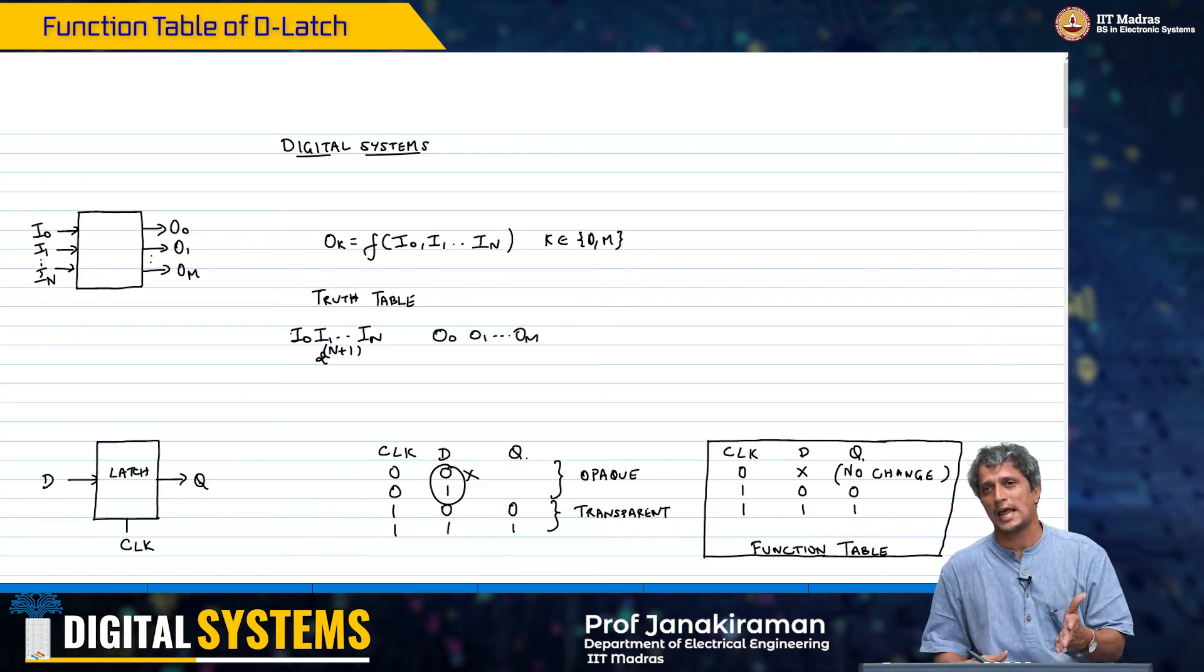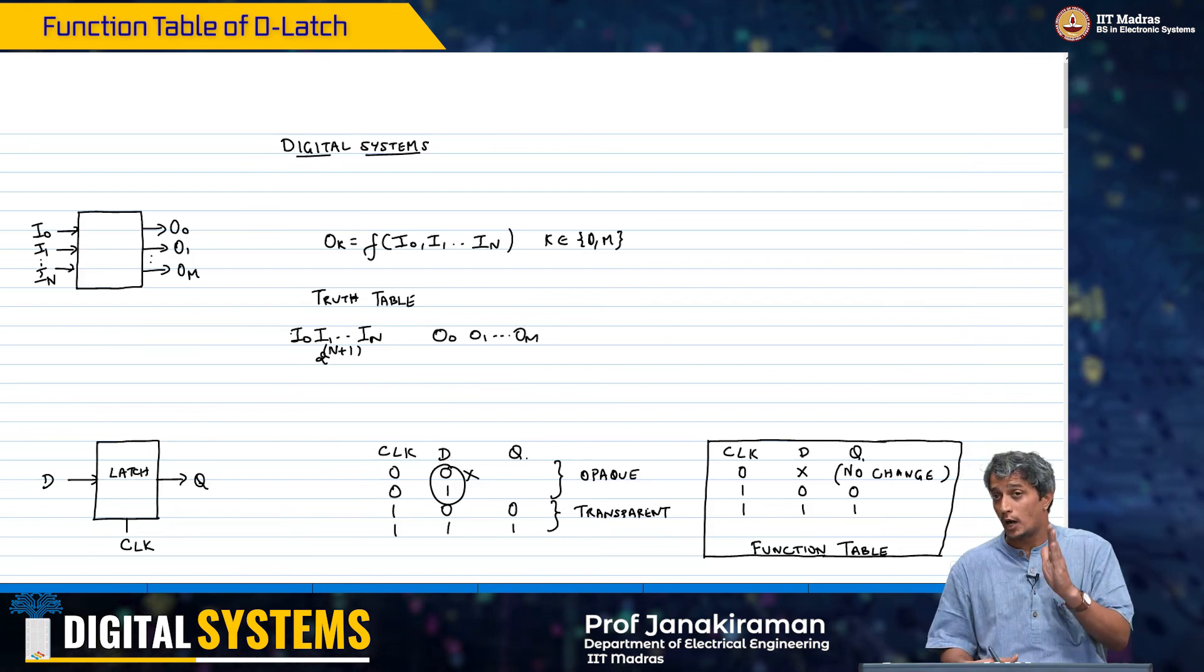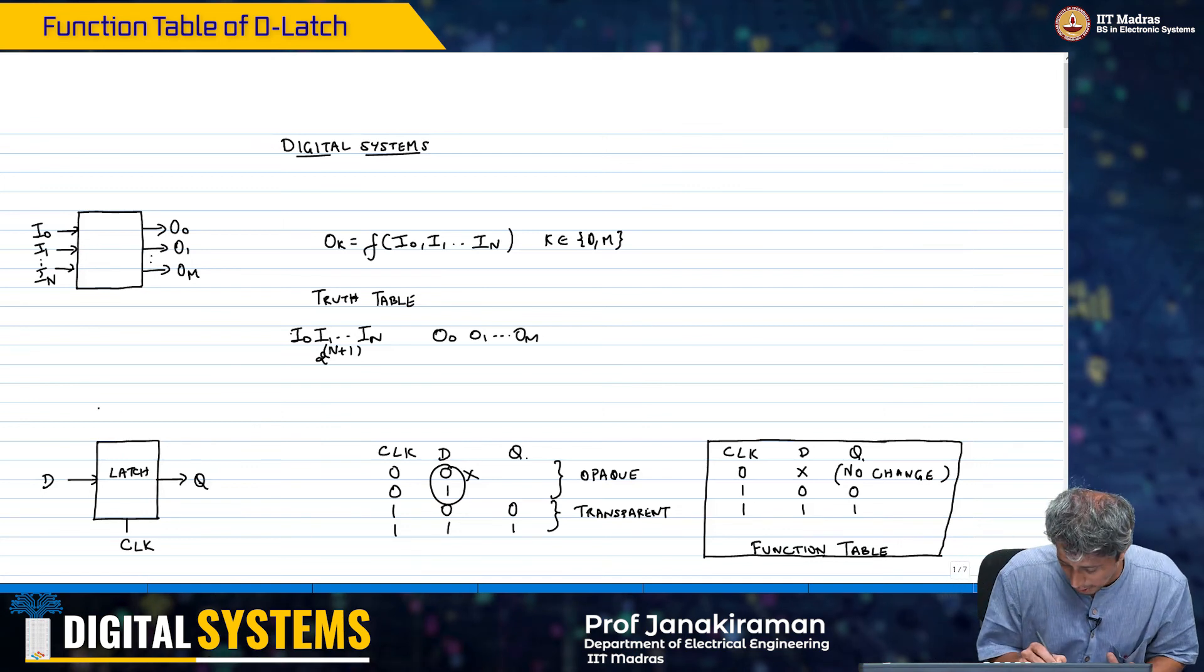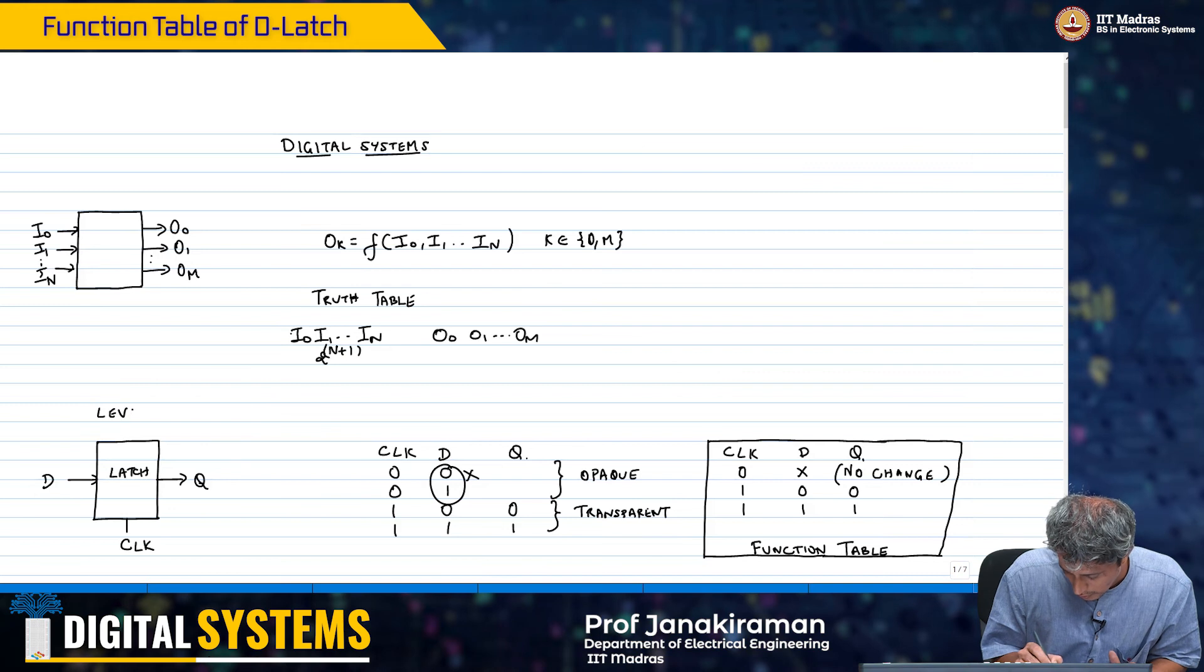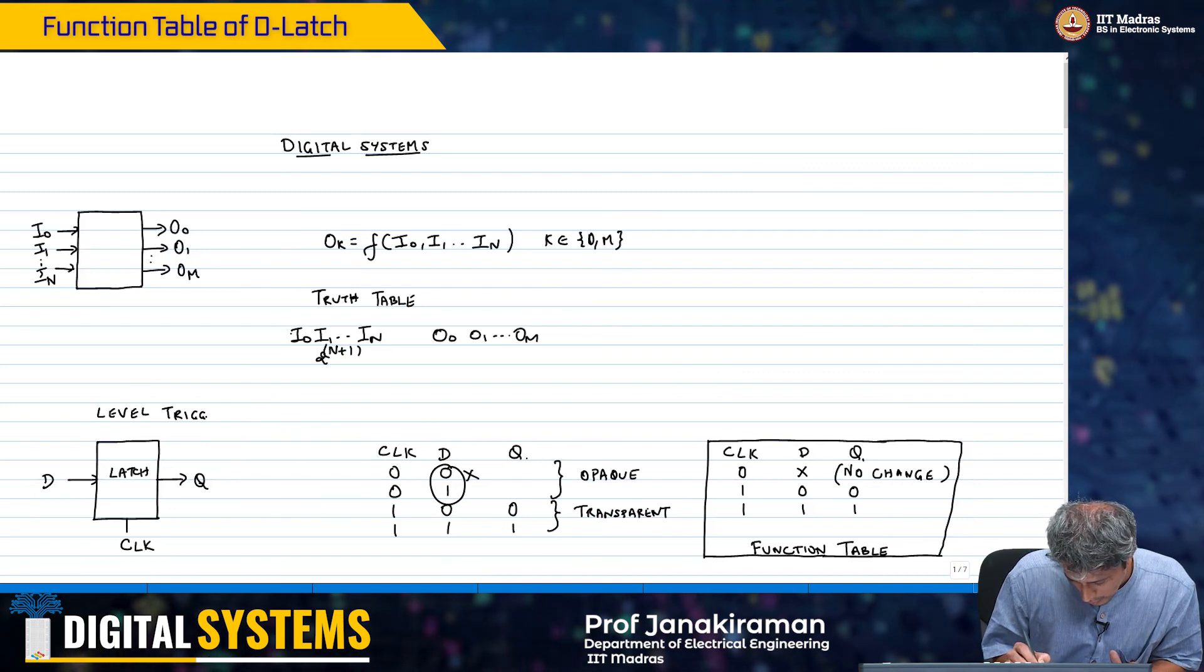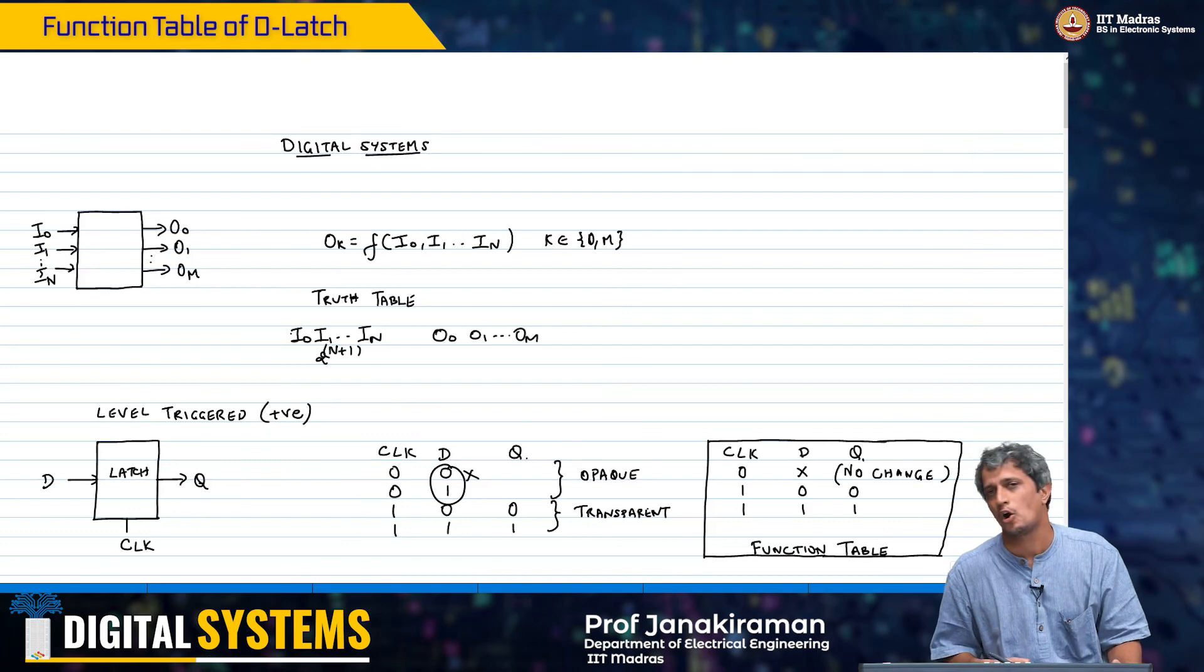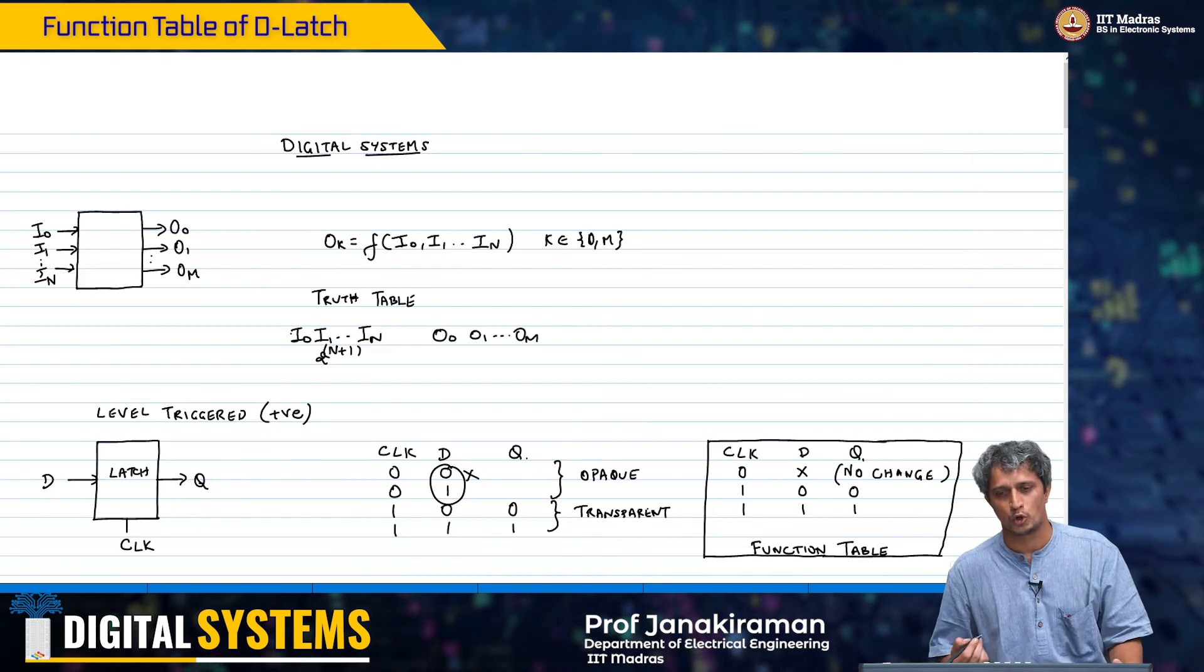And this is only for a latch. For a flop, because it is going to respond to the edge—remember this is level triggered, and we are talking of a positive level, that is when clock equal to 1, D is going to Q.